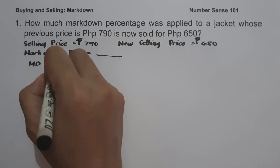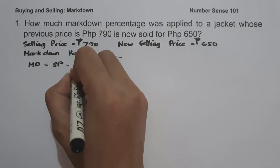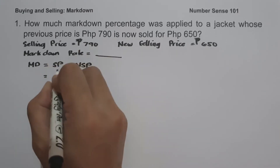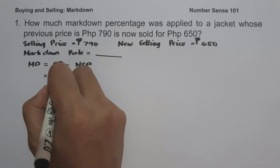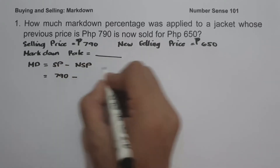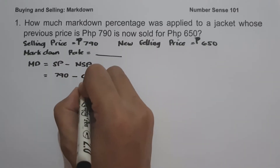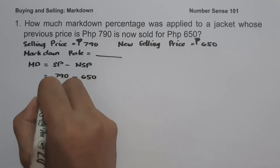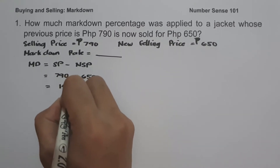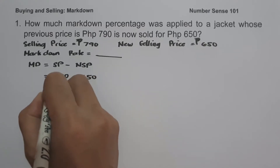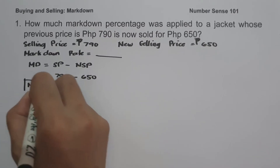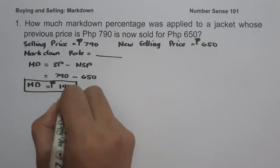To determine the markdown rate, let us find the markdown first using the formula: markdown equals selling price minus new selling price. Our selling price is 790 pesos minus the new selling price of 650 pesos. 790 minus 650 equals 140 pesos, so this will be our markdown.